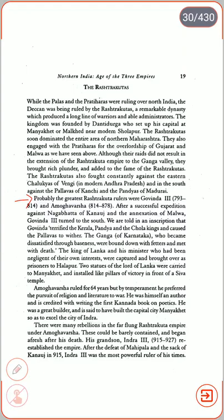The Rashtrakutas also fought constantly against the Eastern Chalukyas of Vengi in modern Andhra Pradesh, and in the south against the Pallavas of Kanchi and the Pandyas of Madurai. Probably the greatest Rashtrakuta rulers were Govinda III (793–814) and Amoghavarsha (814–878). After a successful expedition against Nagabhatta of Kannauj and the annexation of Malwa, Govinda III returned to the south. An inscription tells us that Govinda terrified the Kerala, Pandya and Chola kings and caused the Pallavas to wither. The king of Lanka and his minister were captured and brought as prisoners, and two statues from Lanka were installed like pillars of victory in front of the Shiva temple at Manyakhet.